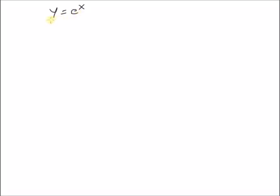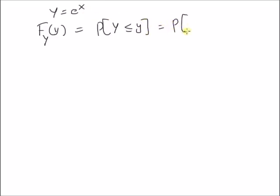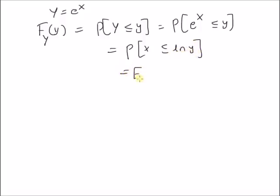Given the derived random variable y is equal to e power x, then the CDF of y, that is F_y(y), is equal to the probability of y less than or equal to small y. But y is equal to e power x, that means probability of e power x less than or equal to small y, which equals — by taking logarithm on both sides — probability of x less than or equal to log y, that is the natural logarithm of y. This is nothing but, by definition, the CDF of x at log y.